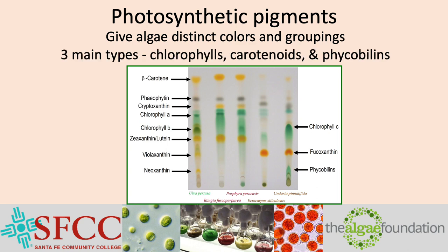There are three main chemical groupings of the photosynthetic pigments: chlorophylls, which are green; carotenoids, which are the reds, orange, and yellows; and phycobiliins, which give reds and blues.